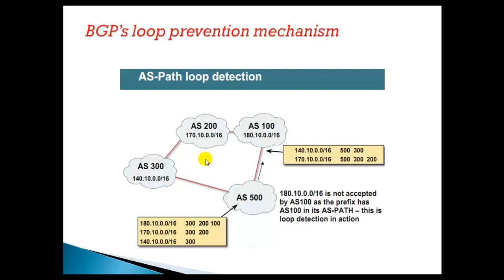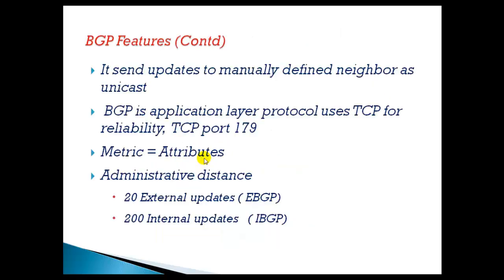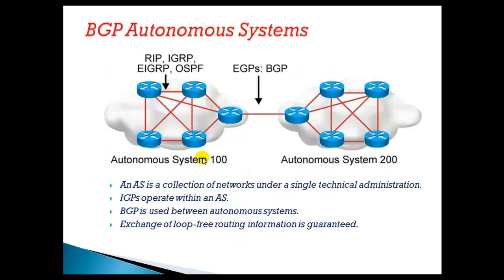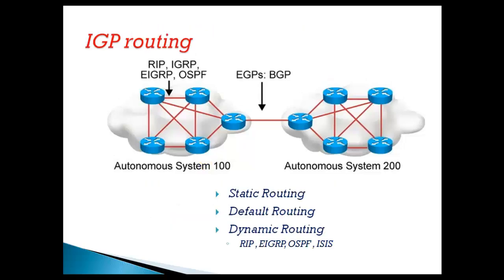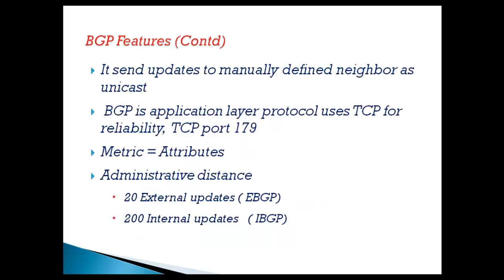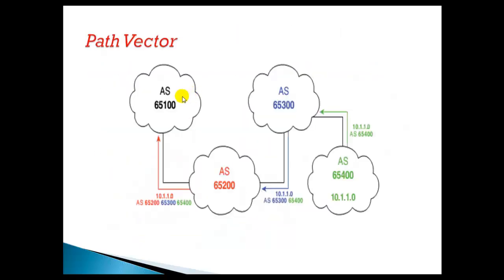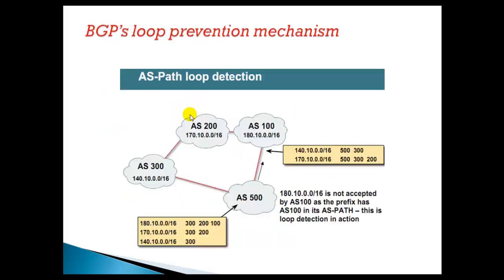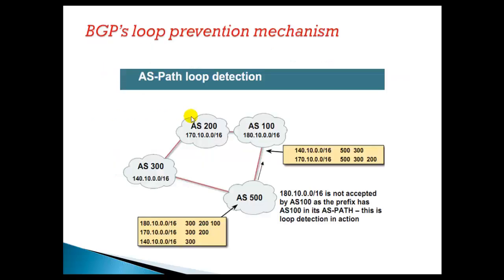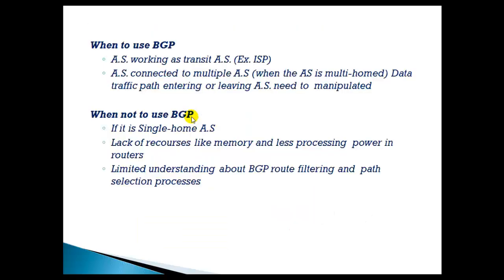Now finally the last thing we'll see here. We have seen some of the basic features — first we started with AS number, then IGP routing, BGP features, and what we discussed just now: the path vector behavior and the loop prevention mechanism. The last thing we will see in this video is when BGP is more appropriate to use.